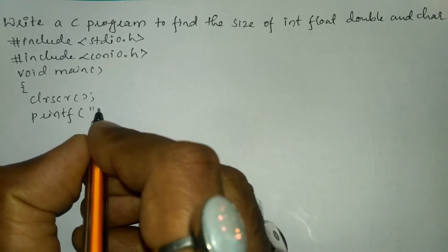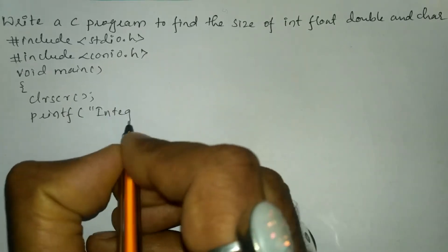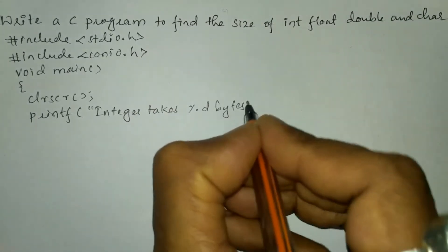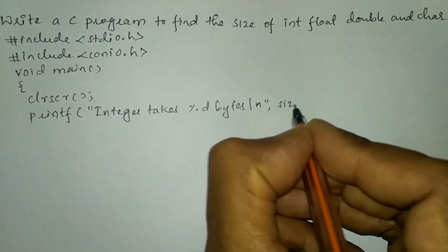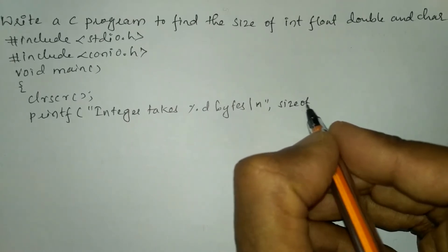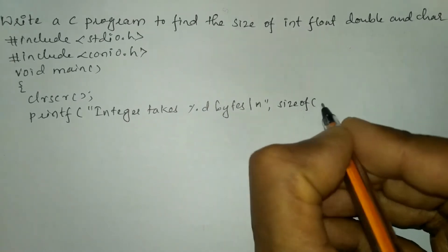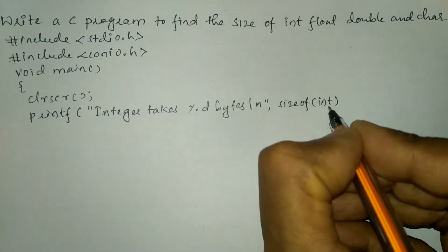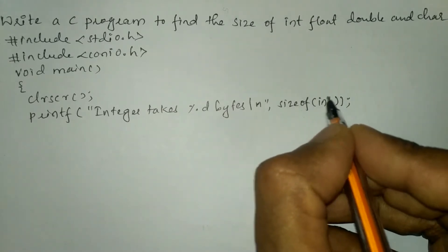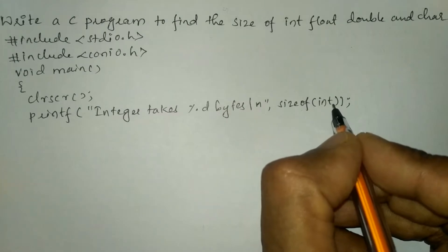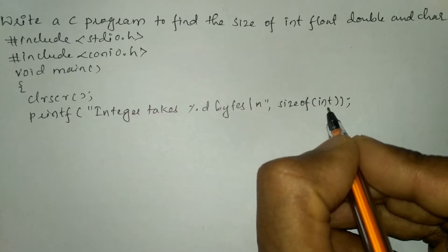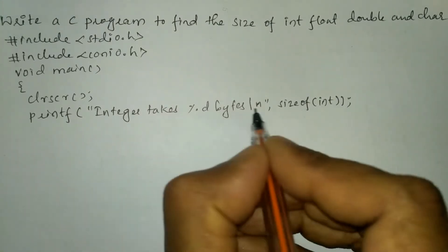In a printf statement I will write in double quotation marks: integer takes percentage d bytes backslash n, and we will use the sizeof operator that returns the number of bytes each data type takes. Here I am going to enter the basic data type int. The sizeof operator returns how many bytes integer takes — integer will take 2 bytes of data, so it is going to print: integer takes two bytes.